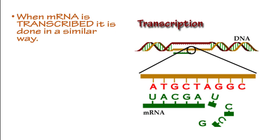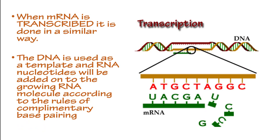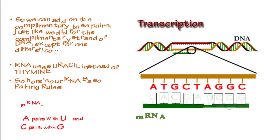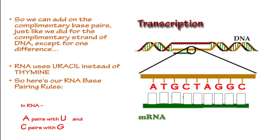When mRNA is transcribed, it is done in a similar way. The DNA is used as a template, and RNA nucleotides will be added on to the growing RNA molecule according to the rules of complementary base pairing. We can add on the complementary base pairs just like we did for the complementary strand of DNA, except for one difference: RNA uses uracil instead of thymine. So here are our RNA base pairing rules: in RNA, A pairs with U and C pairs with G. Pause the video if you want to give it a try and see if you can fill in the boxes.